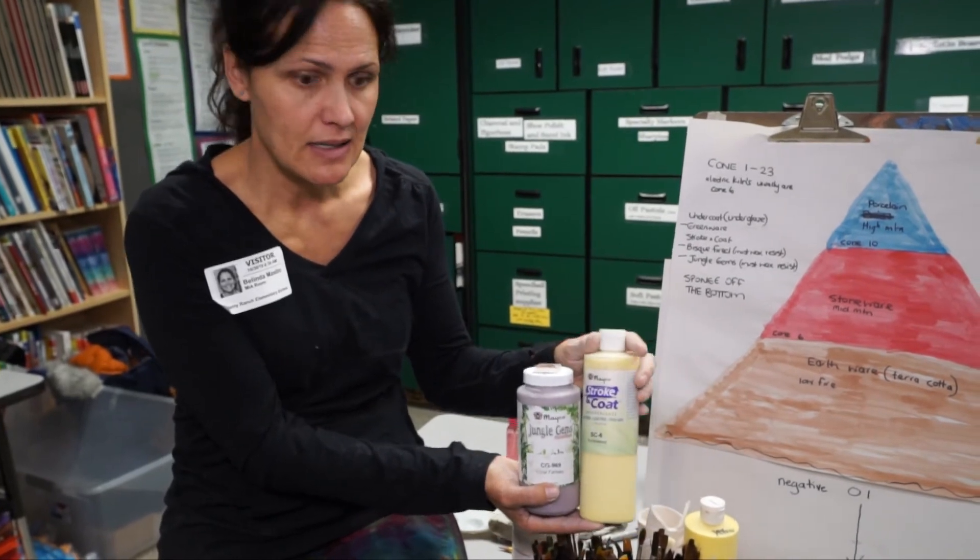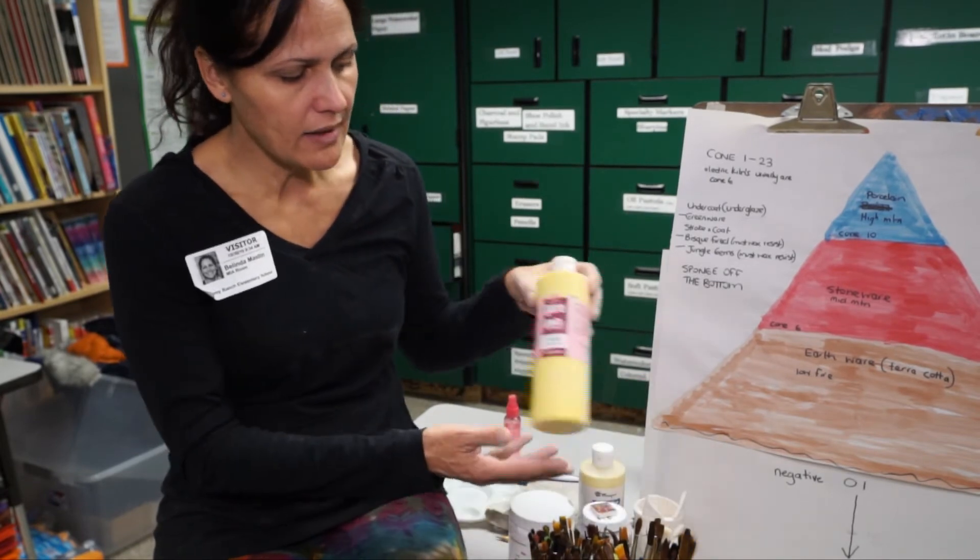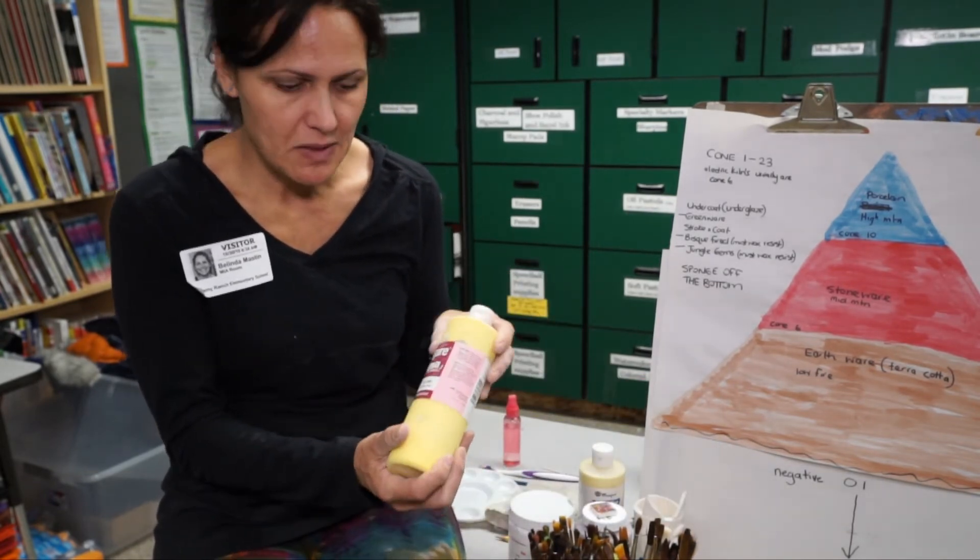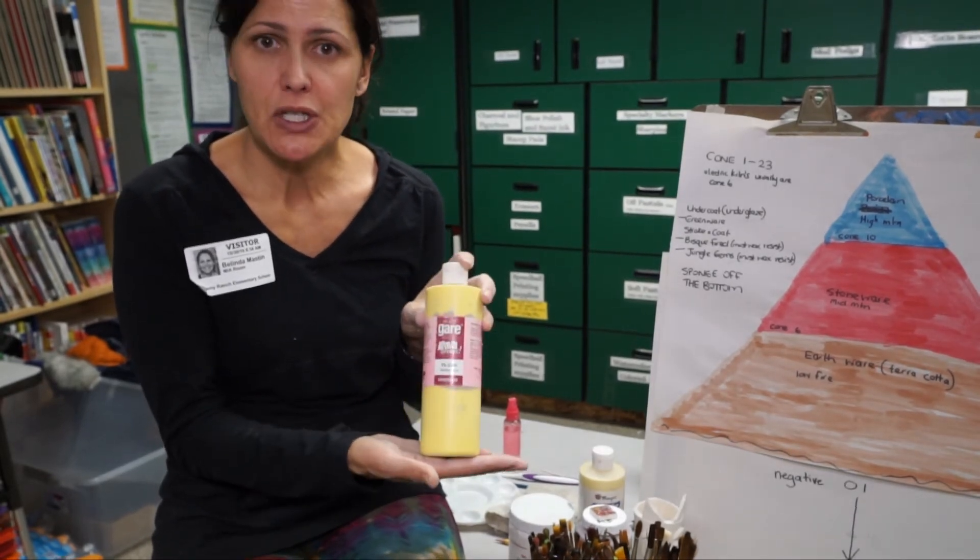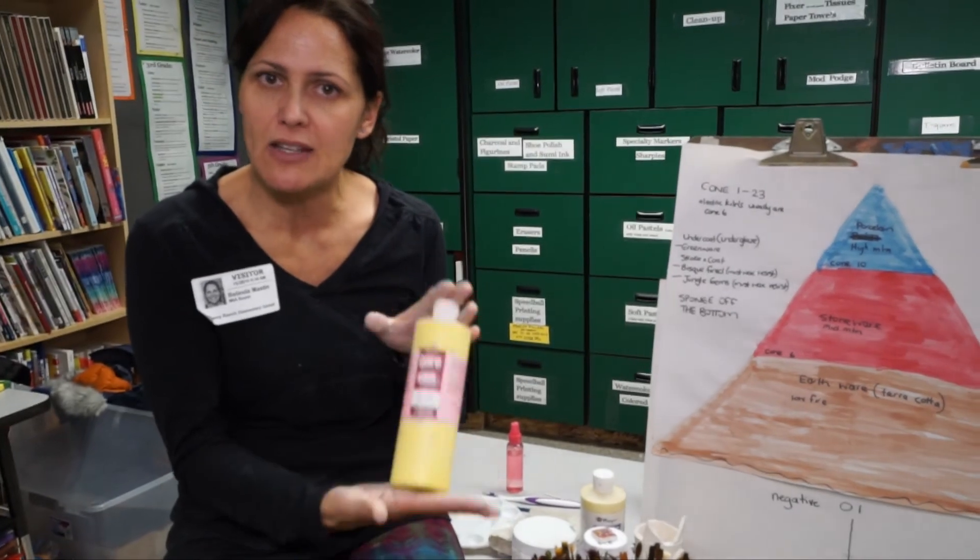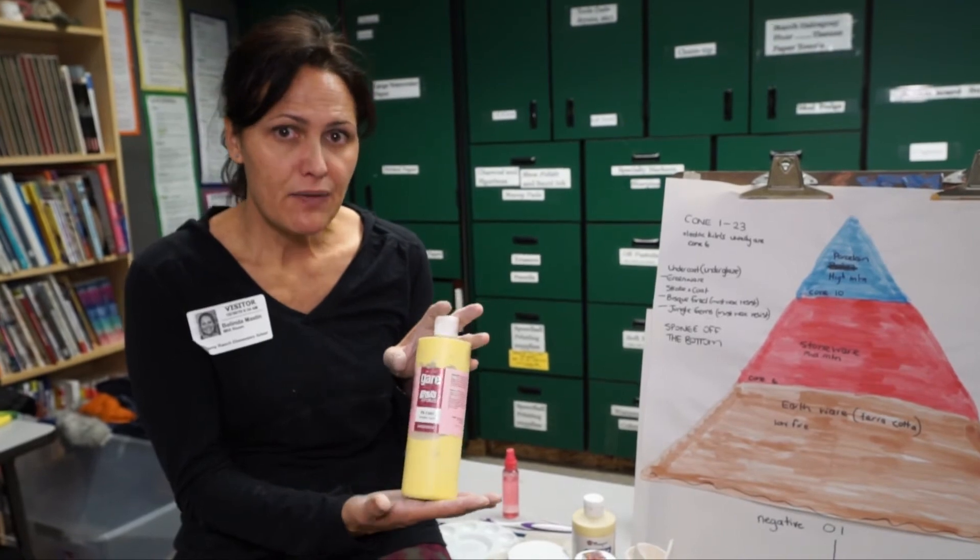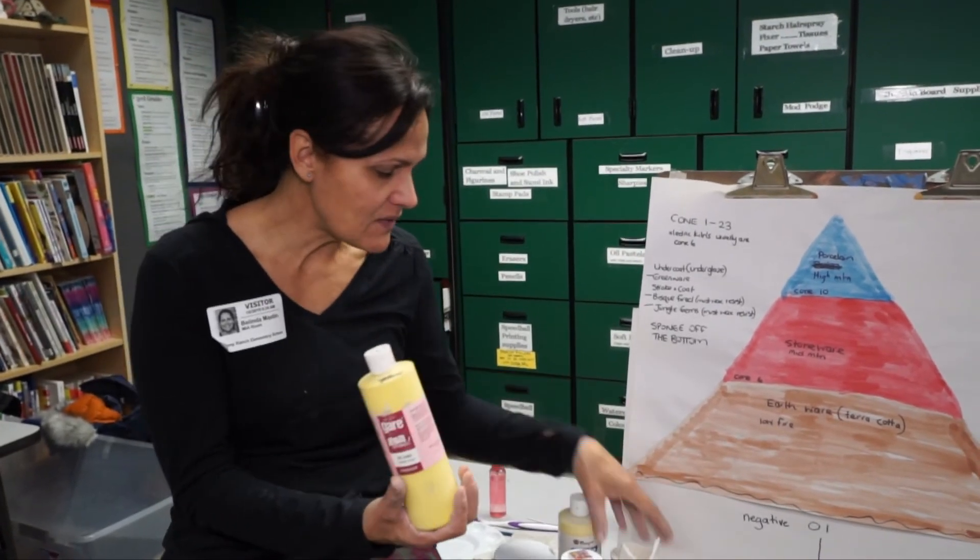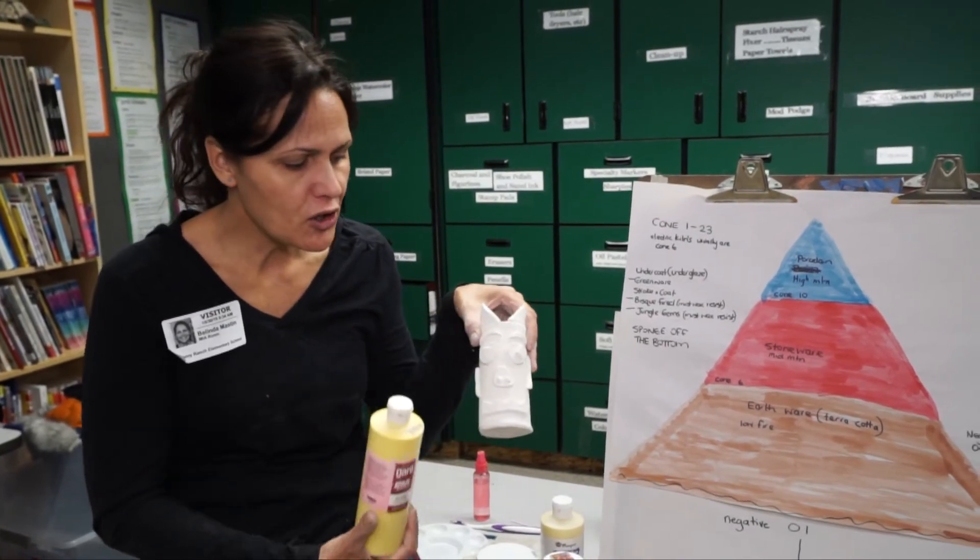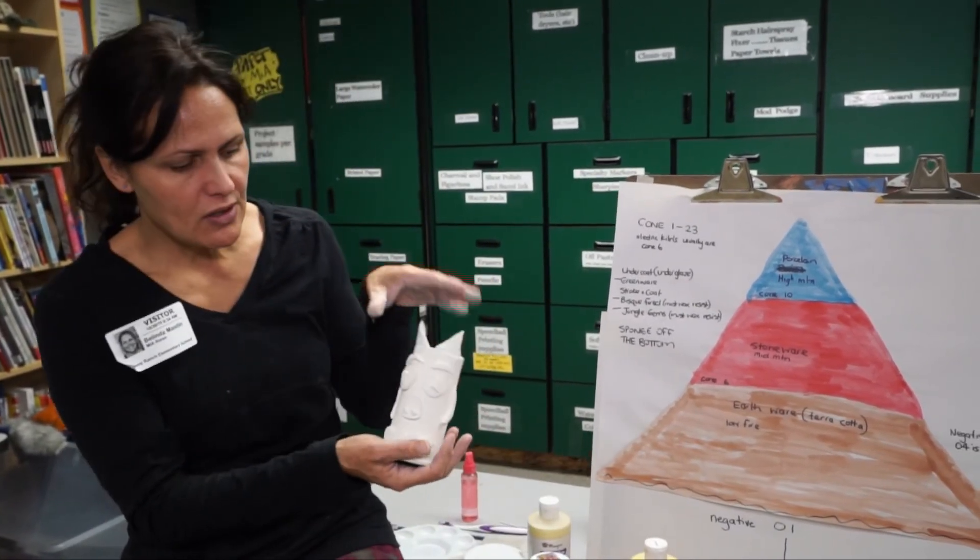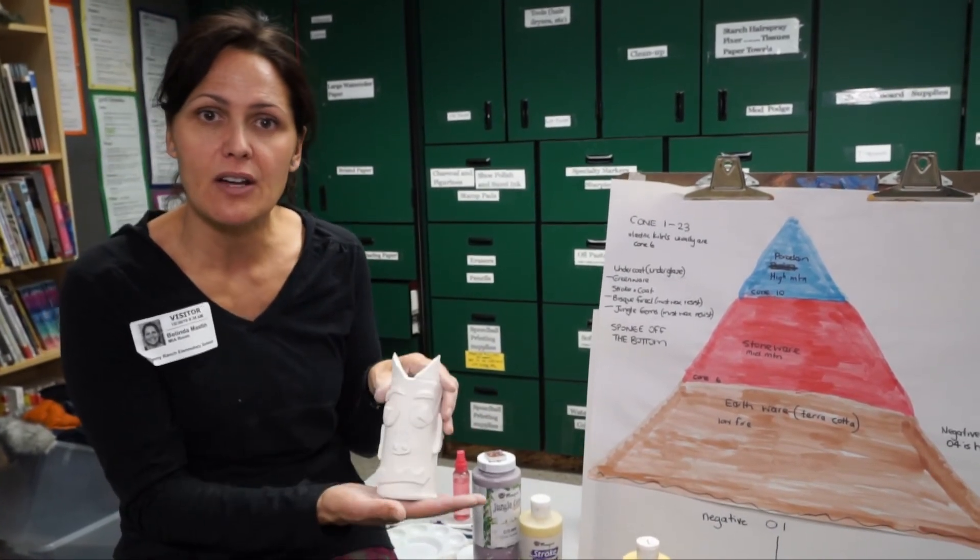Now, one thing I did forget to mention was that the undercoat one, which you can use with all different types of brushes, is a matte finish. So if you do want a gloss finish with your undercoat product, then you have to take it to get fired. And once it's fired, it's in this bisque state and it has this coating on top of it. You can go ahead and put a clear coat of glaze over the top of it, and we can fire it once again.